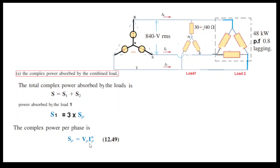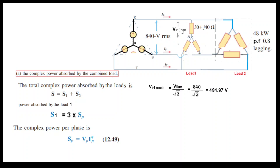The complex power per phase is given by the formula: Sp = Vp × Ip conjugate — keep in mind it is the conjugate, given as equation 12.49. Now let's find Vp. The phase voltage can be found by dividing the line voltage by root 3, so 840 divided by root 3 gives 484.97 volts.